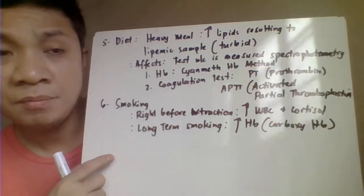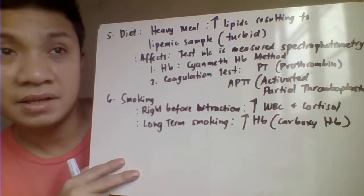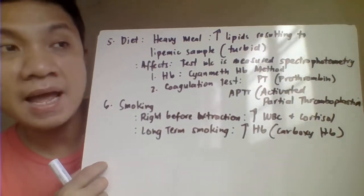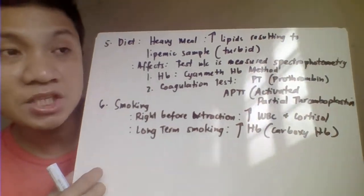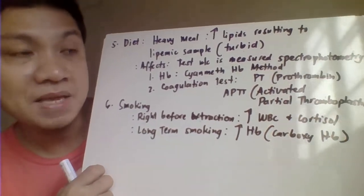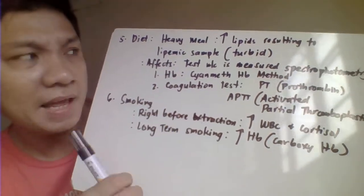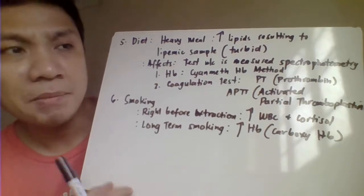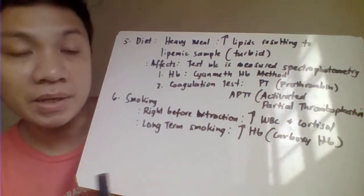In hematology, fasting is not really as strictly required for blood sample collection. But if the patient has a heavy meal right before blood extraction, it would tend to increase the lipid concentration in the plasma. The plasma of that patient will become turbid, especially if the patient ate a lot before collection. That is called lipemia — a lipemic sample is a turbid sample because of the heavy meal, associated with high lipid concentration.